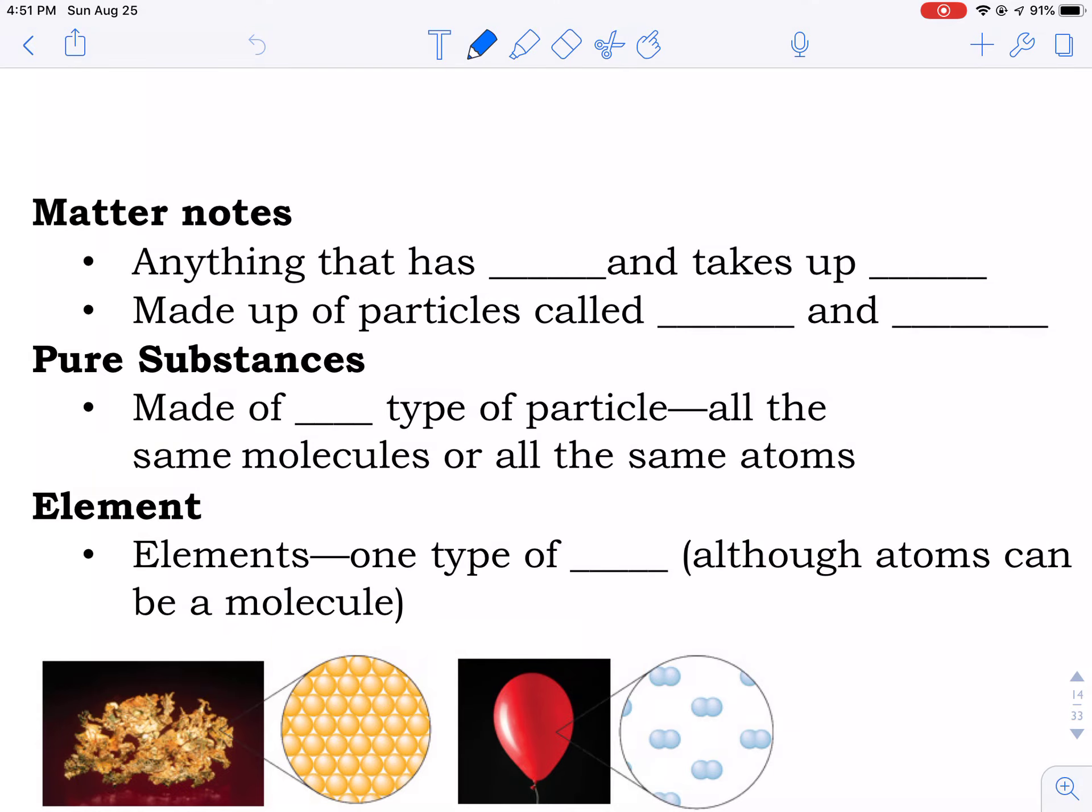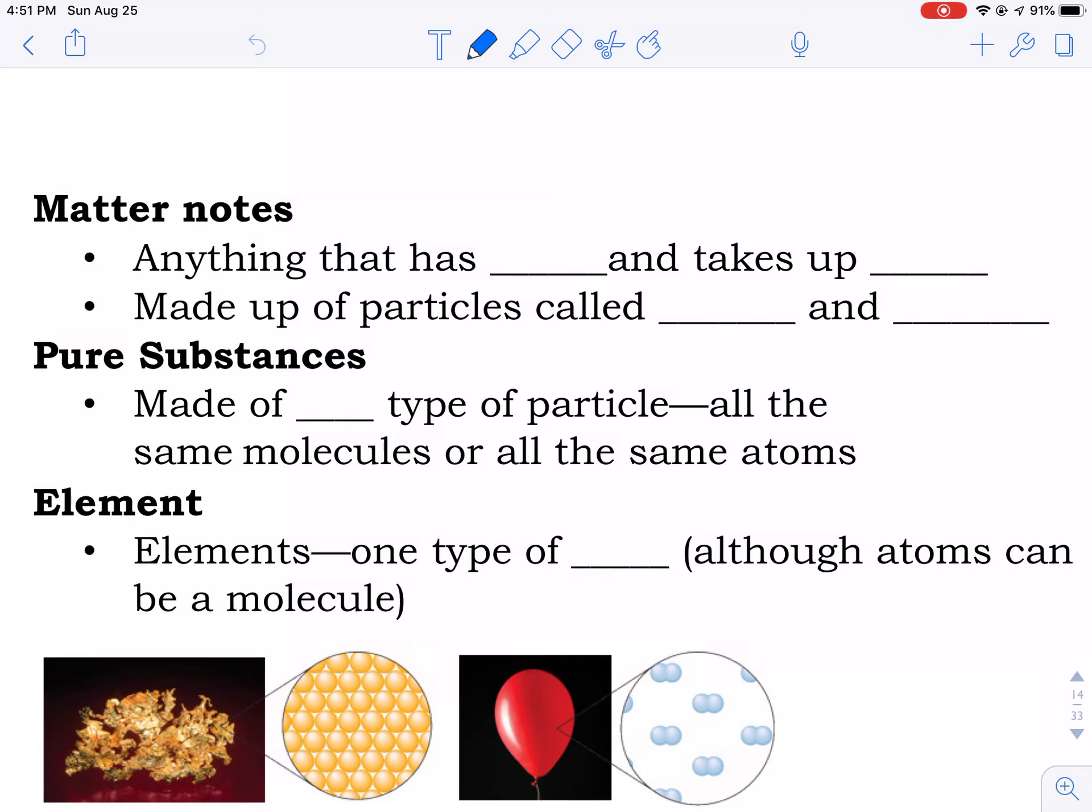Matter, the definition of what matter is, is anything that has mass and takes up space. It's made up of particles. The smallest particles are single atoms, and atoms that are bonded together are molecules.